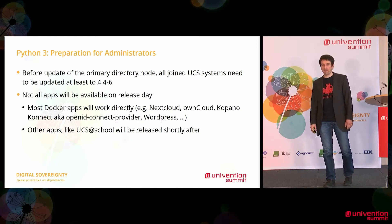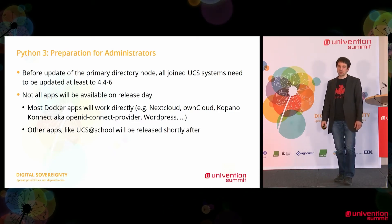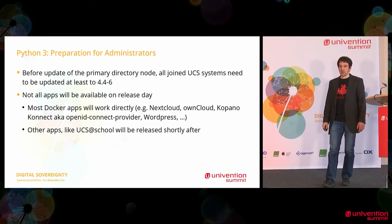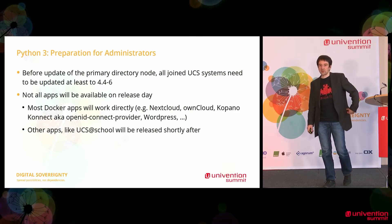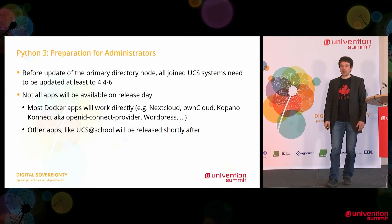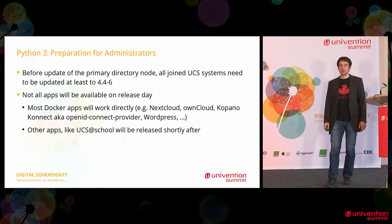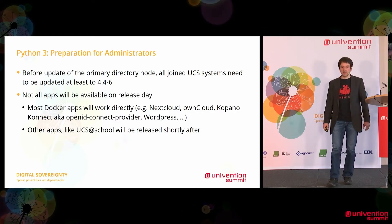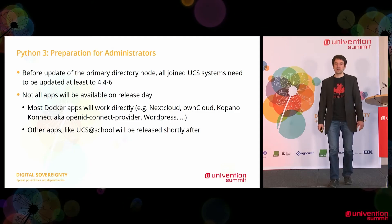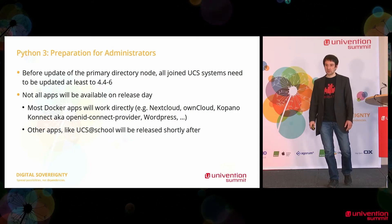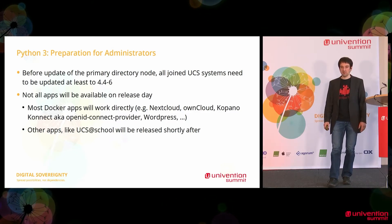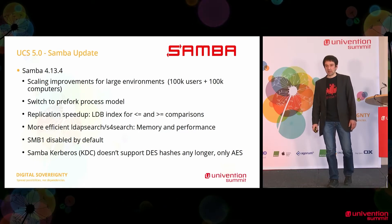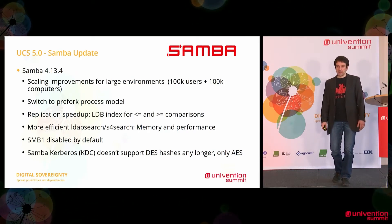What does the transfer to Python 3 mean for administrators? Before updating the primary directory node, all joined UCS systems need to be updated at least to 4.4.6. Not all apps will be available on the day of release. Most Docker apps will be available — for instance, Nextcloud, Owncloud, OpenIT Connect, or WordPress. Some apps will be released shortly after the UCS 5 update — that probably applies to UCS@school, according to current planning.